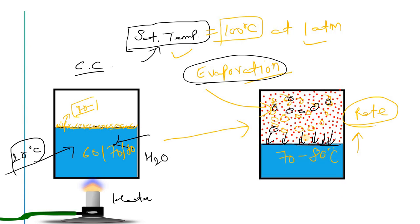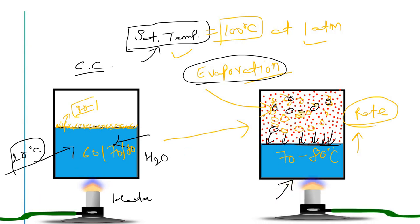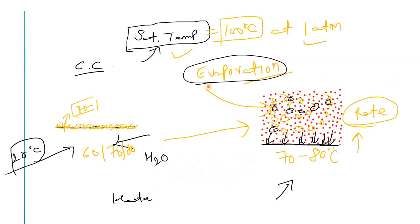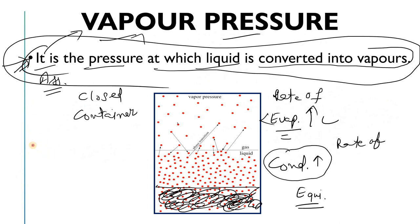It's very simple: when you heat a liquid, vapors generate in the free space and exert pressure on the free surface — that pressure is the vapor pressure. In other words, it is the pressure at which liquid is converted into vapors. As for the relation between temperature and pressure: as you increase temperature, vapor pressure increases, because the rate of evaporation increases.